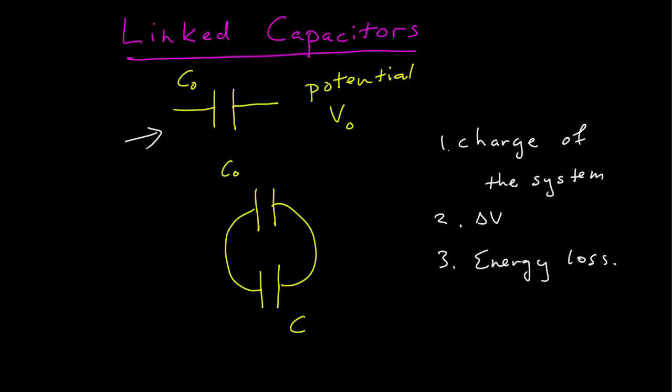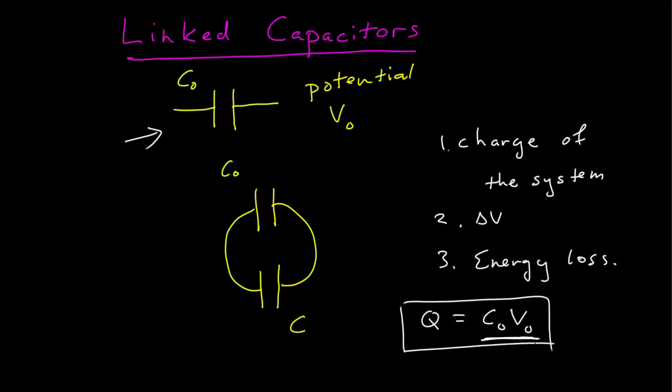We're given that we have a capacitor with some set voltage across it. We know the relationship between charge and voltage for a capacitor: the amount of charge is equal to the capacitance times the voltage across the capacitor. So that gives us the total charge of the system, which is just C-naught times V-naught.